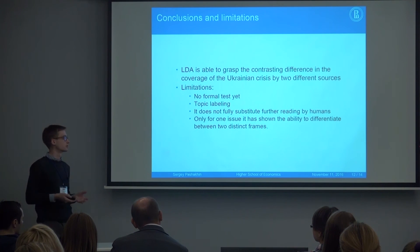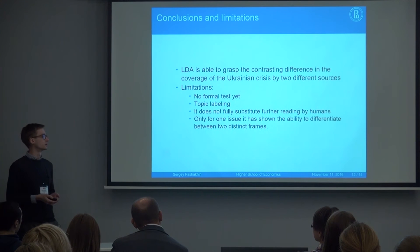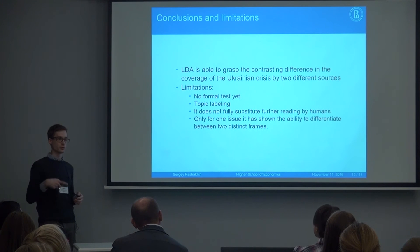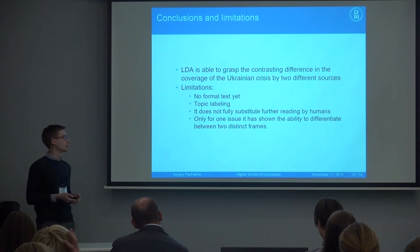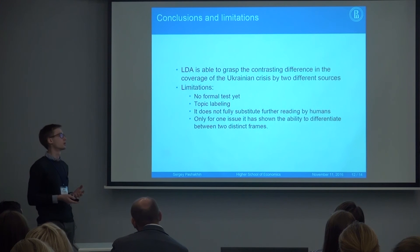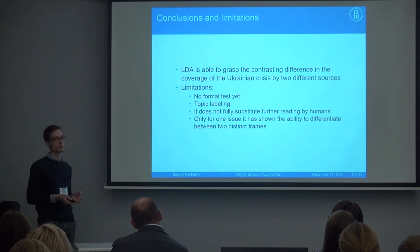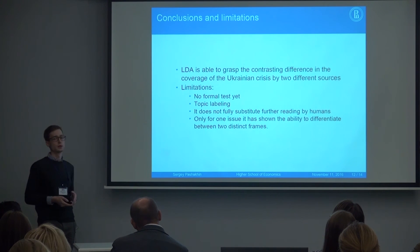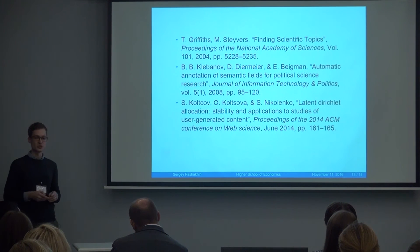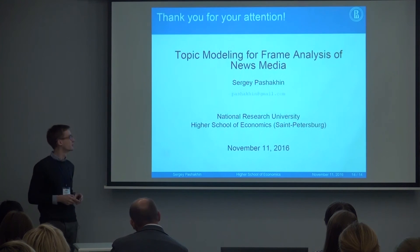In my case, only one issue in the corpus was so strikingly clearly represented. Other topics were not so obvious — you had to go deeper into the texts to understand why. I think it's not because the algorithm couldn't do that, but because you have to use some kind of mixed method, perhaps with different tools. Thank you — I'd like to answer your questions and hear your suggestions.